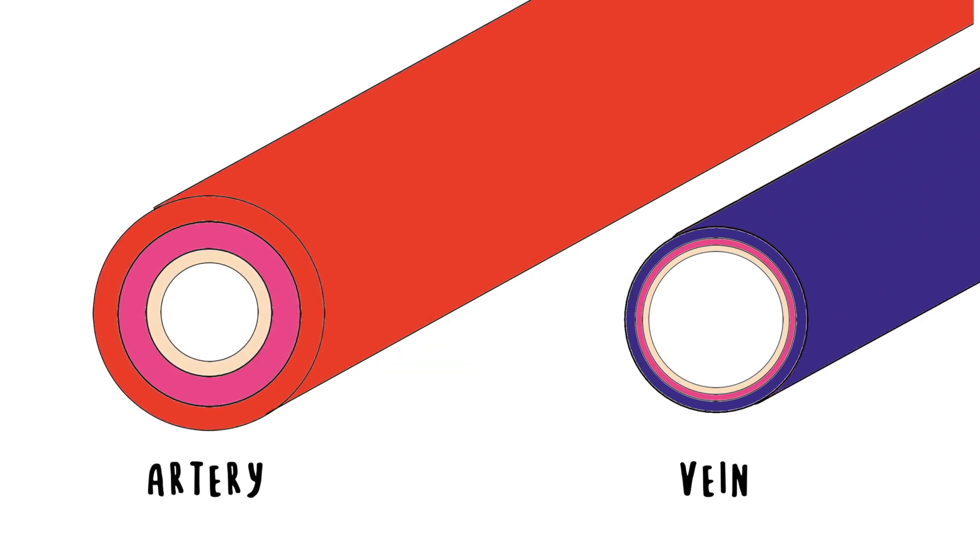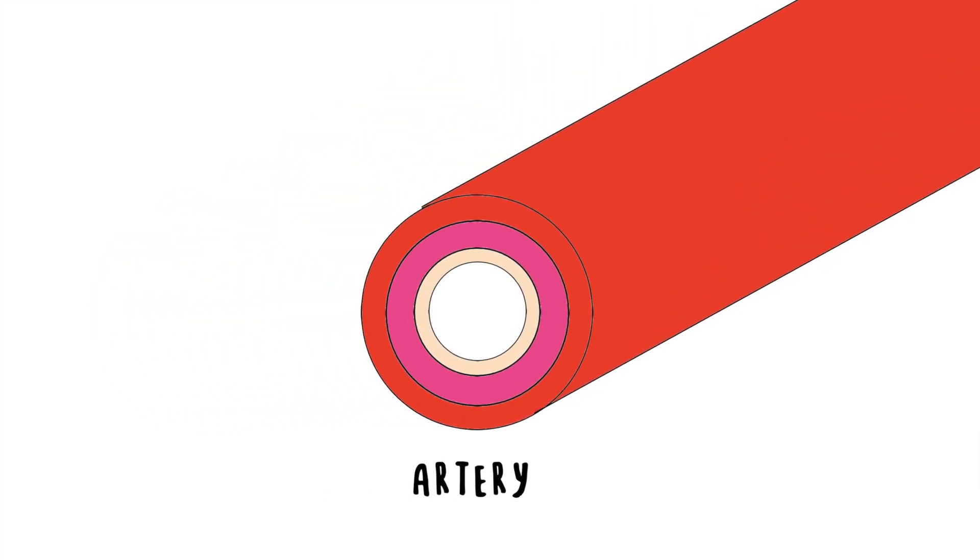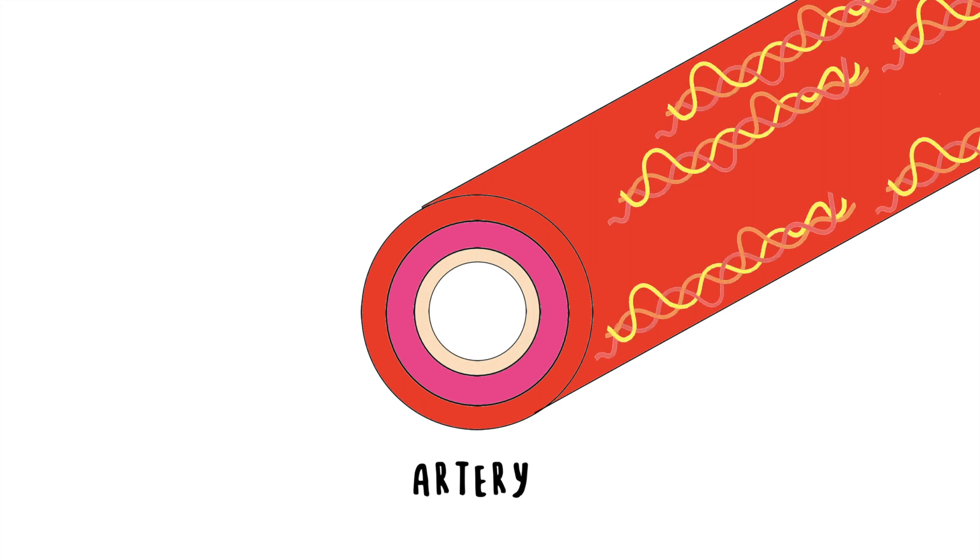Even if both have the same three layers, arterial walls are much thicker than vein walls as they contain higher blood pressure. We'll focus only on arteries for this video, as vascular EDS affects more the arteries than the veins. In VEDS, arterial walls are much weaker due to the loss of quantity and quality of the collagen fibers. The fragile blood vessels can then cause many complications.